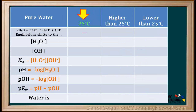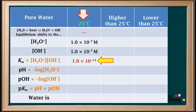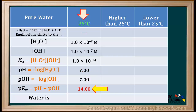Now we'll recall the actual values for these quantities in pure water at 25°C. The hydronium and hydroxide ion concentrations are both 1 × 10⁻⁷ M. The value of Kw is 1 × 10⁻¹⁴. The pH and the pOH are both equal to 7, and pKw is 14. Pure water is neutral, and the concentration of hydronium equals the concentration of hydroxide, which also confirms it's neutral.